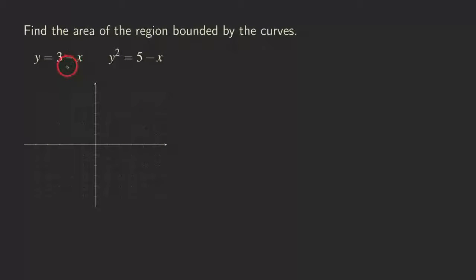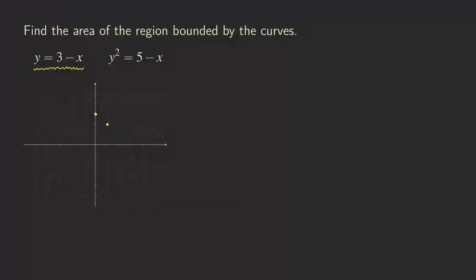We are going to graph the straight line first, which is easy to graph. All we need to do is look at the y-intercept, which is (0, 3), so we plot that point. Then the slope is negative 1, which is negative 1 over 1, so we go down one unit and right one unit to get another point. Two points are all we need to graph the line.